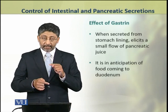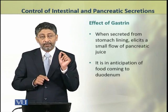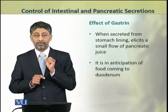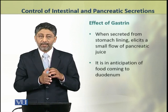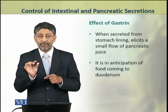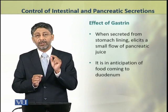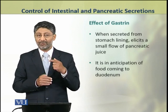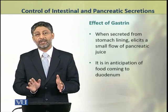Gastrin, when secreted from the stomach lining, starts a slow flow of pancreatic juice. When food is still in the stomach and gastrin is secreted, it has an effect on the pancreas and the pancreas begins to release a small quantity of juice. This is in anticipation of the food that will soon be coming to the duodenum.